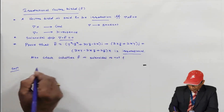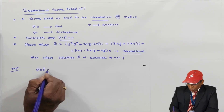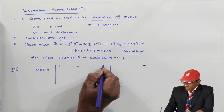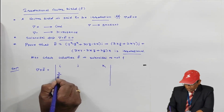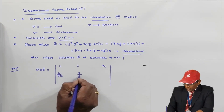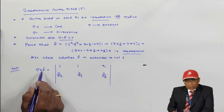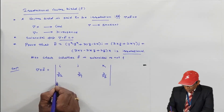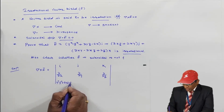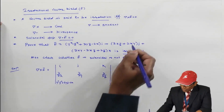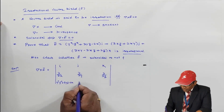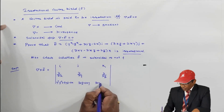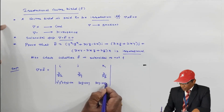Here f̄ is given. We check whether del cross f̄ equals zero or not. To calculate del cross f̄, we set up a determinant: the first row is i, j, k; the second row is ∂/∂x, ∂/∂y, ∂/∂z; and the third row has the coefficients — (y² − z² + 3yz − 2x) for i, (3xz + 2xy) for j, and (3xy − 2xz + 2z) for k.